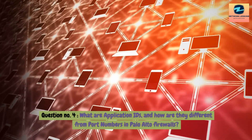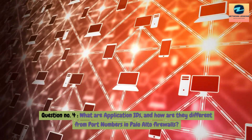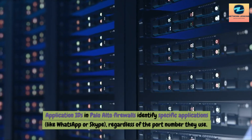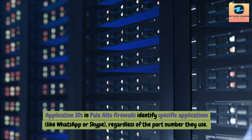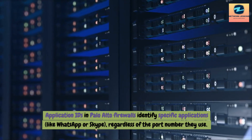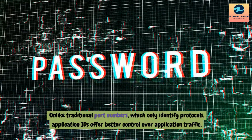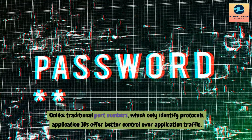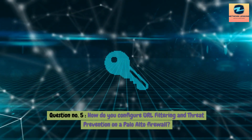Question 4: What are Application IDs and how are they different from port numbers in Palo Alto firewalls? Answer: Application IDs in Palo Alto firewalls identify specific applications like WhatsApp or Skype regardless of the port number they use. Unlike traditional port numbers, which only identify protocols, Application IDs offer better control over application traffic.